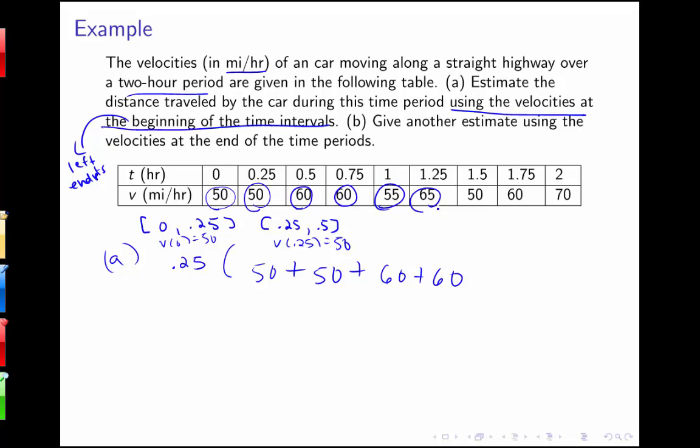Then I'll use 60 and then 60. On the next two time intervals, 55, 65. I'll use 50. And then notice that my last time interval would be from 1.75 to 2, so I'll use 60. 70 is the velocity at the right endpoint of the last interval, so that will not get used here. I've got 55, 65 plus 50 plus 60. So we're adding up eight different things here, so I'm going to have 0.25 times whatever this total is.